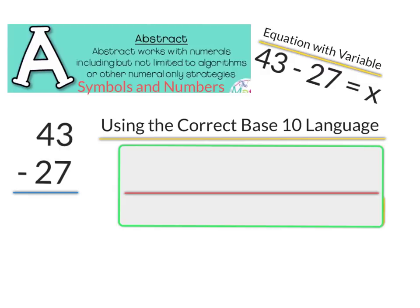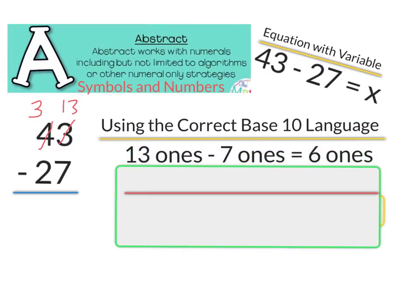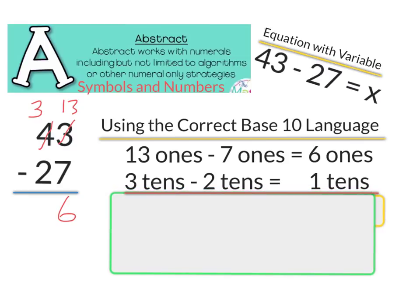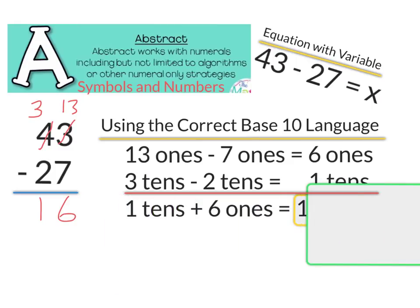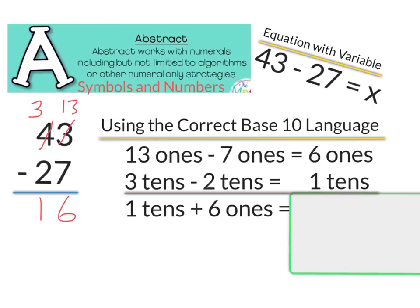We look at 43 minus 27. We're unable to subtract 7 from 3, so we take one 10 from our tens place, which turns the tens digit back to 3 and we bring 10 ones over, giving us 13 ones. Using correct base 10 language: 13 ones minus 7 ones equals 6 ones. Then 3 tens minus 2 tens equals 1 ten. Finally, one 10 plus 6 ones equals 16. This is our final difference.